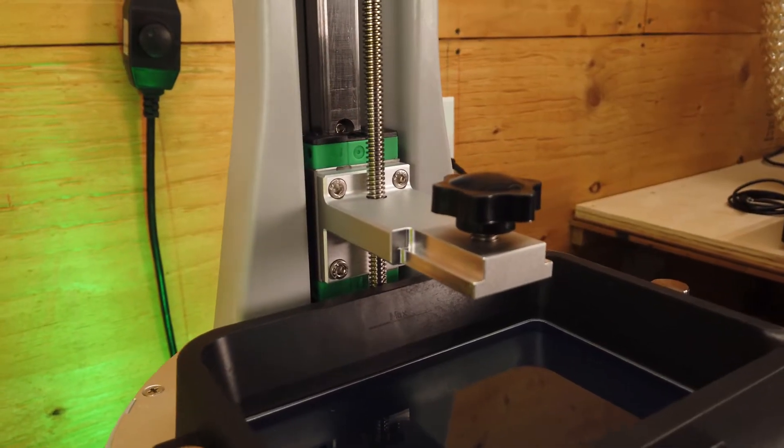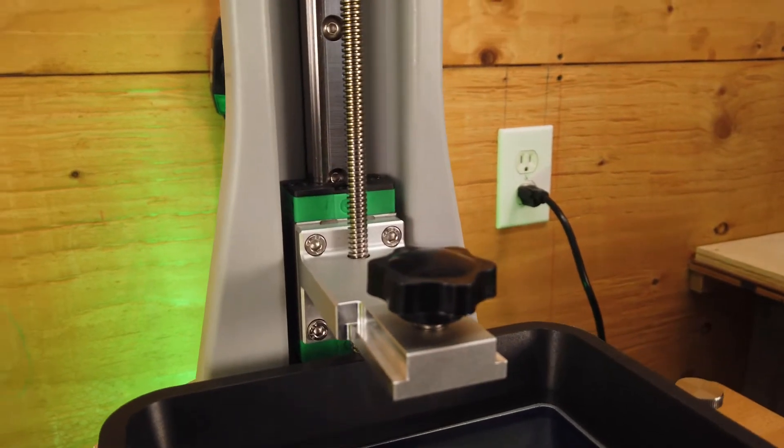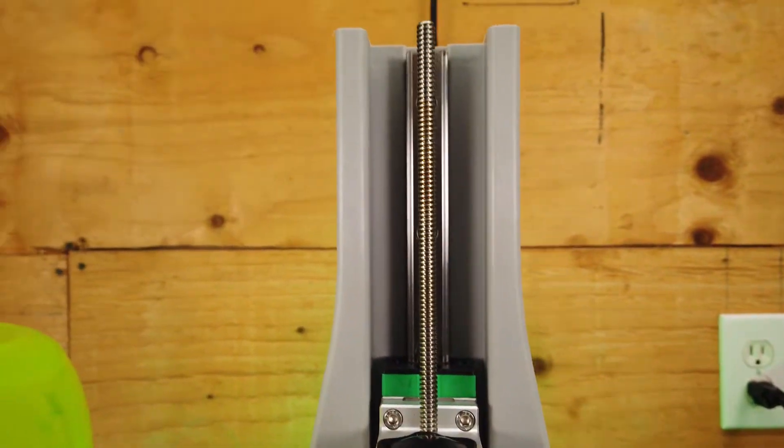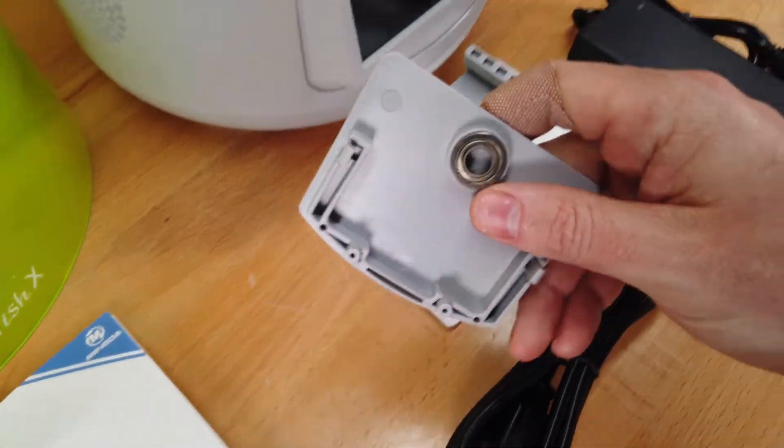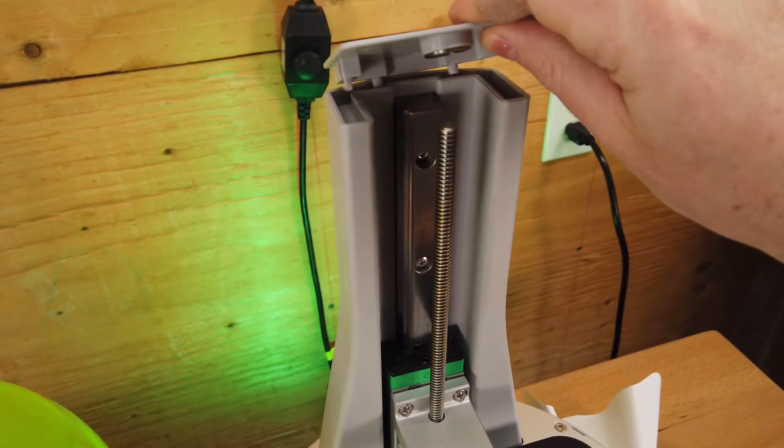This printer is using a thicker linear rail for the Z-axis and what looks like a standard lead screw. You do have to install this top cap that has a bearing in it, but it's easy and you just kind of push it on.